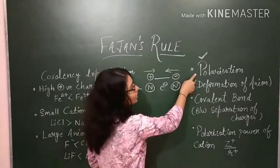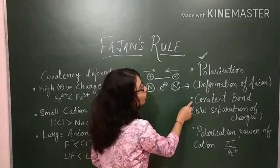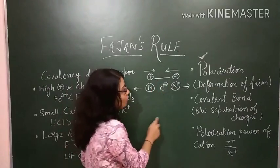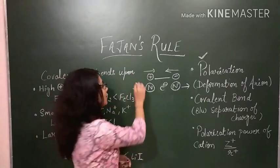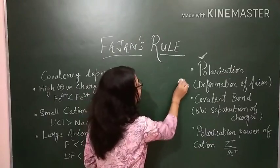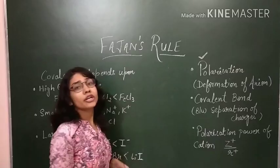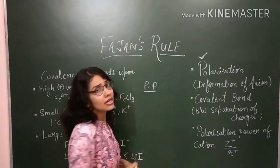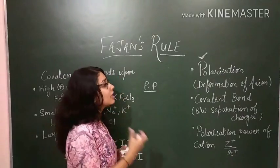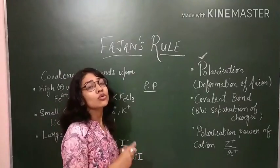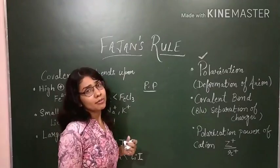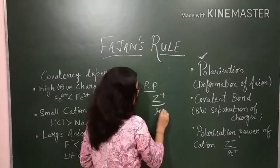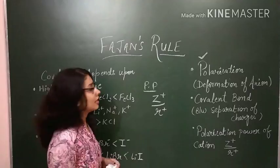After discussing polarization as the deformation of an anion and how covalent character is introduced, we come to the polarization power of a cation. The amount to which a cation can polarize, distort, or deform an anion is called its polarization power. It depends on the charge-to-radius ratio of the cation.